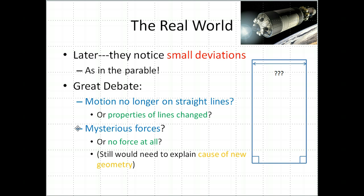Other people say there might be some mysterious forces. Maybe we don't see why these things are deviating from straight lines, but maybe there's a force. The other camp says no, I don't think there's any force at all. They aren't deflected away from straight lines, the straight lines are just different. But they would still have the burden of proof of why is there this new geometry?